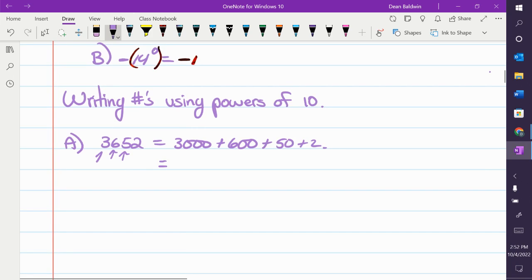Now, 3,000 is really 3 times 1,000. 600 is 6 times 100. 50 is 5 times 10. And 2 is just 2 but we can write it as 2 times 1 just for the sake of this. Does everybody agree? Like, I haven't changed the number. I'm just rewriting it. I'm breaking it into different components. Is that okay for everybody?